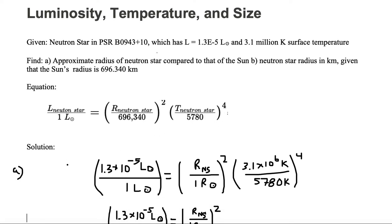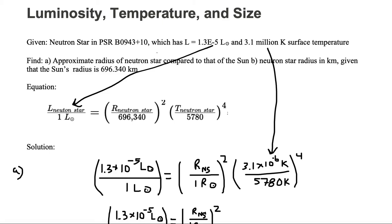Here's our solution for part A. We substitute in for the luminosity of the neutron star: 1.3 times 10 to the minus 5 solar luminosities divided by 1 solar luminosity, equal to the quantity (radius of the neutron star divided by 1 solar radius) squared, times the quantity (3.1 times 10 to the sixth Kelvin — since 3.1 million Kelvin means 10 to the sixth — divided by 5780 Kelvin) to the fourth power.